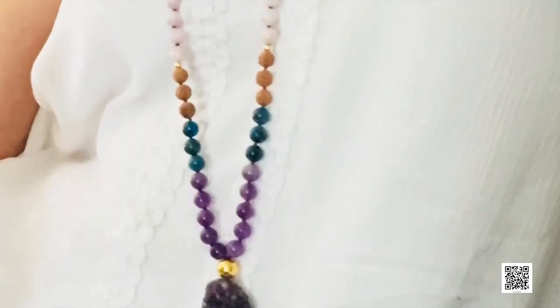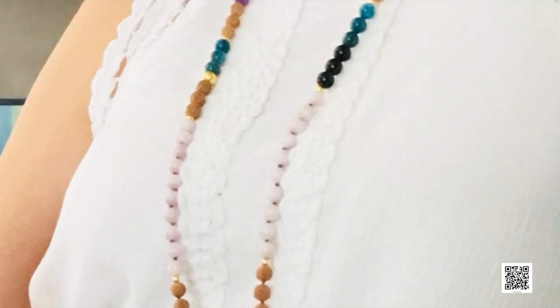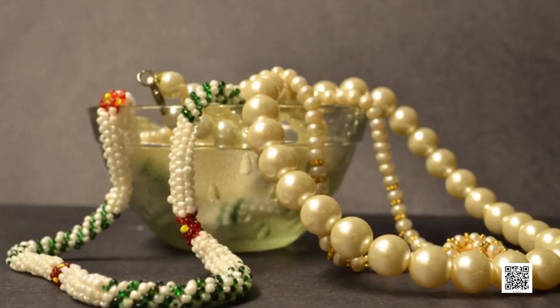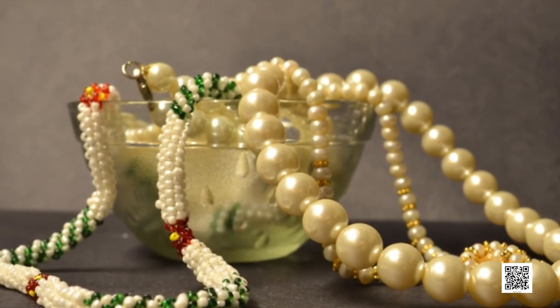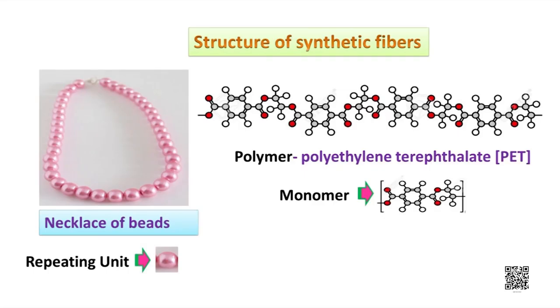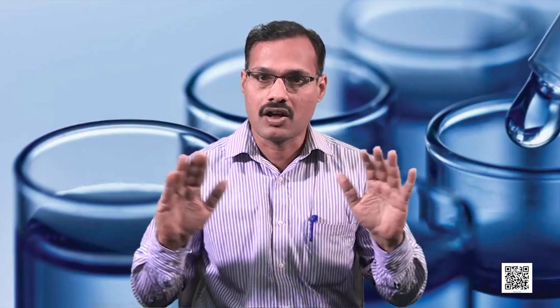Are you familiar with the uniform pattern found in a necklace of beads? In this, the beads are joined with the help of a thread. Synthetic fibers also possess a similar pattern — it is a chain of small units joined together. Each small unit is known as a monomer, and it is a chemical substance. Many monomers combine to form a large single unit called a polymer.